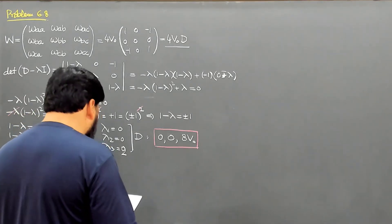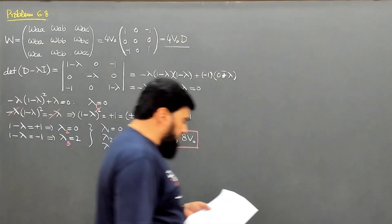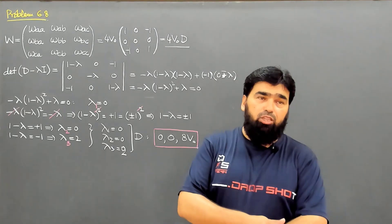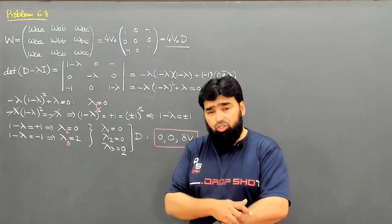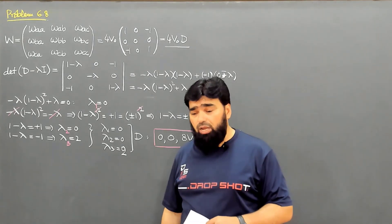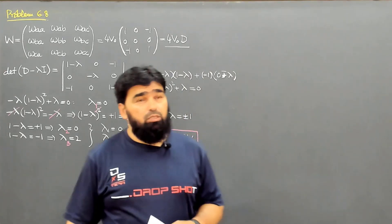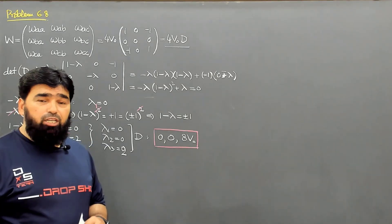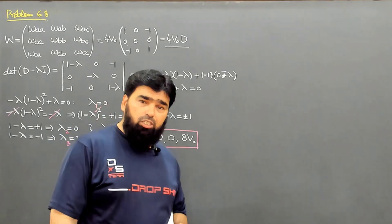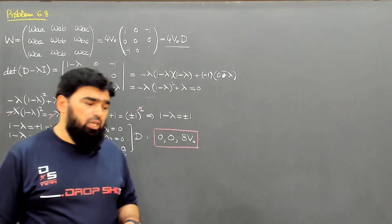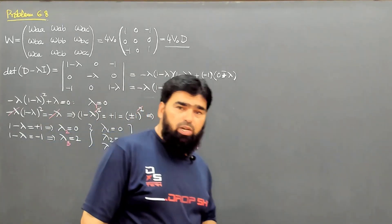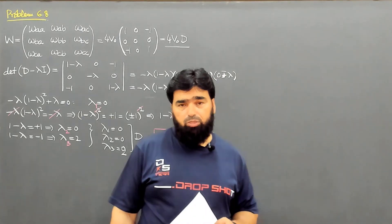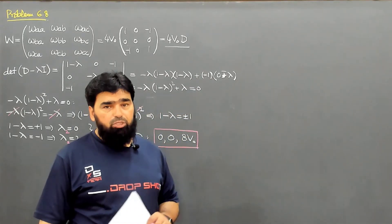These are the first-order corrections to the triply degenerate state. It means two of those states have no correction to the energy, while the third state has a correction of 8V0. With this we are concluding this chapter. Remaining topics like the fine structure of hydrogen atom, the Zeeman effect, relativistic correction, and spin-orbit coupling are reading material and will not be covered in this lecture series. This is the end of chapter 6, and we will move toward chapter 7.